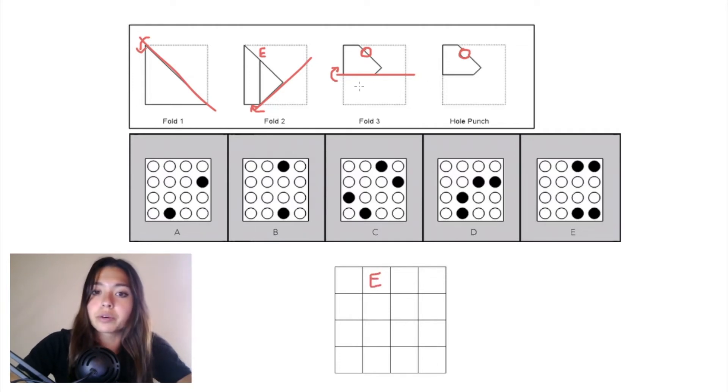Working backwards, when we undo fold three, this hole punch needs to be reflected back down across that horizontal plane and it'll end up right here. We can see that hole punch ends up at least partly on paper in fold two and in fold one.